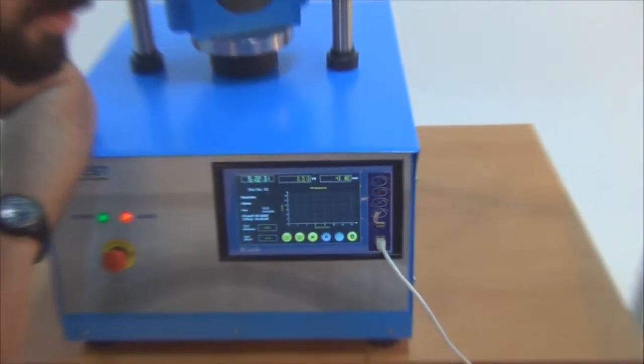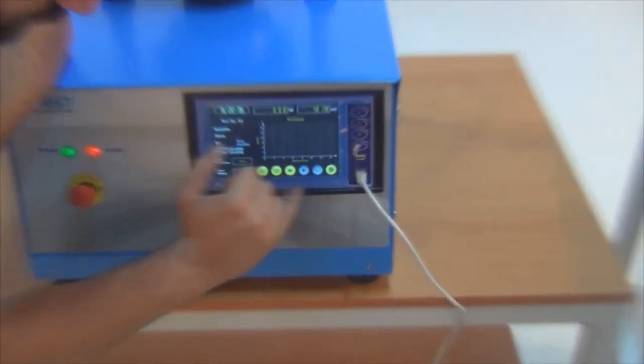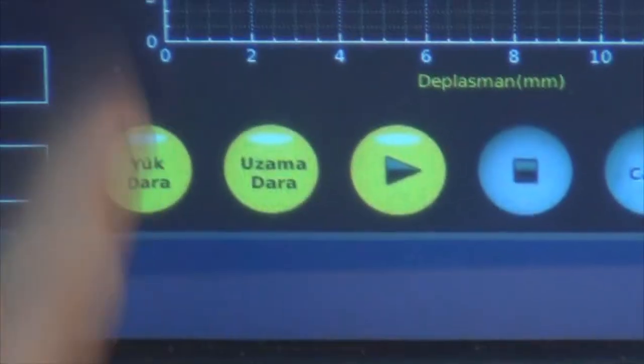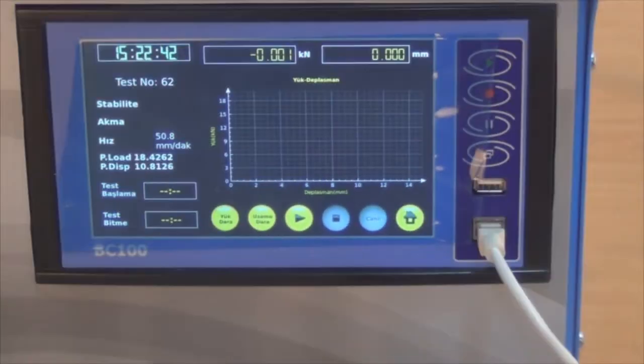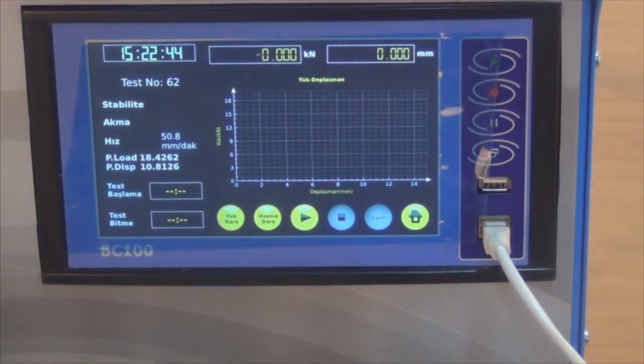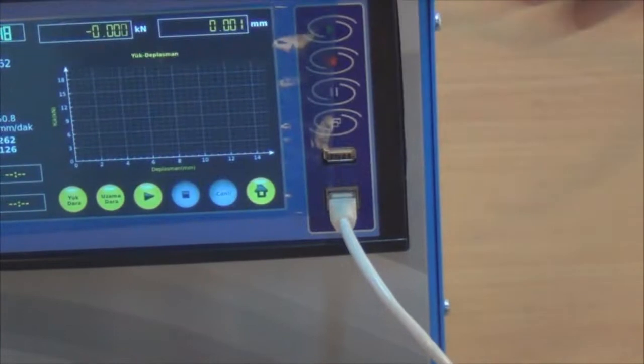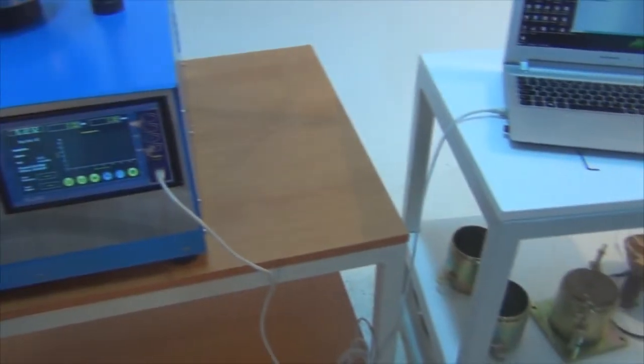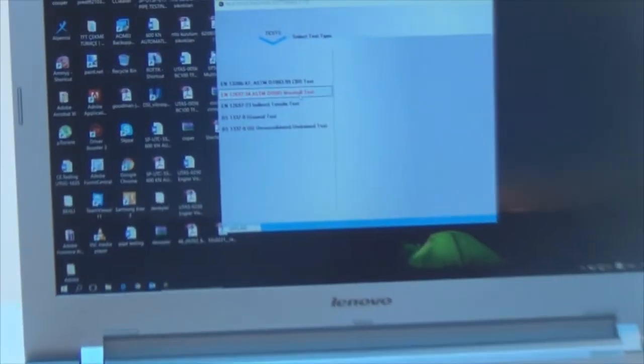Then we make the computer connection. Just before making the connection, since we know there is no load on it, we are going to zero the displacement and the load as well. Now we are going to connect this. As you may remember on the CBR, we connected the device with the computer. Now we conduct the test using the same program but choosing the Marshall test.